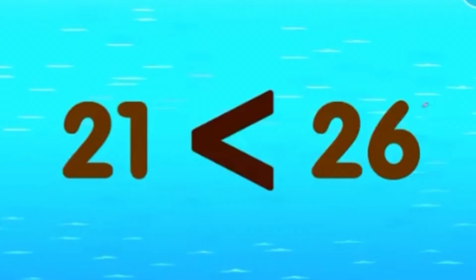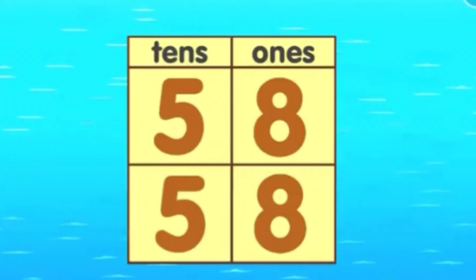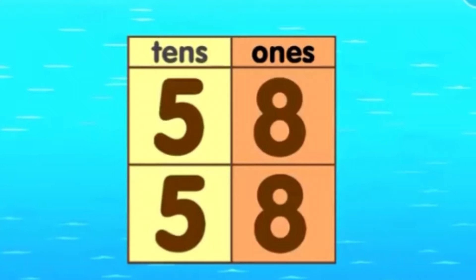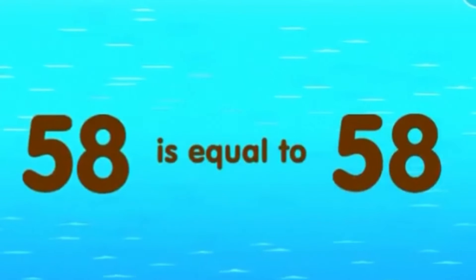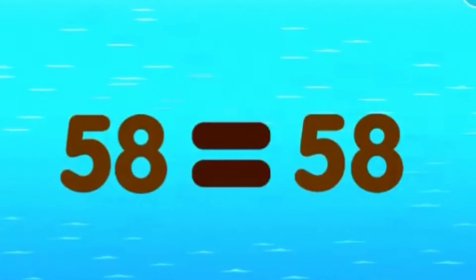It shows that 21 is less than 26. Or, 26 is greater than 21. Now let's see another example. Can you compare these two numbers? When comparing the tens, we find that they are the same — 5 and 5. Now look at the ones. The ones are also the same — 8 and 8. Thus, we can say that 58 is equal to 58. This time, the alligator does not know which number to eat, so his mouth looks like this. It means that 58 is equal to 58.